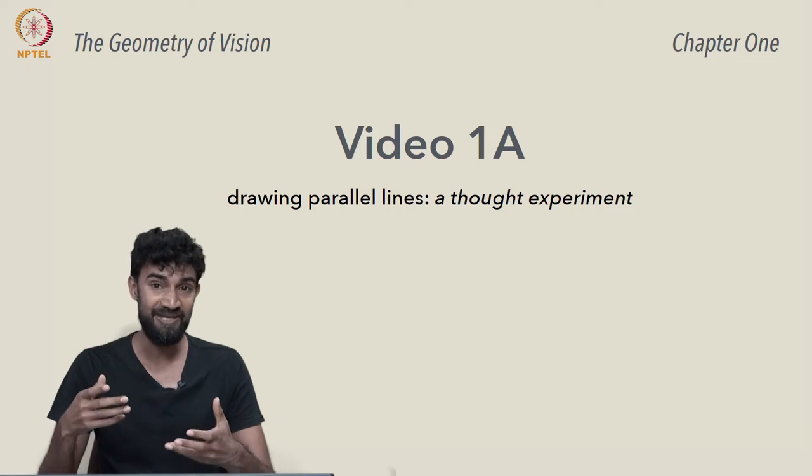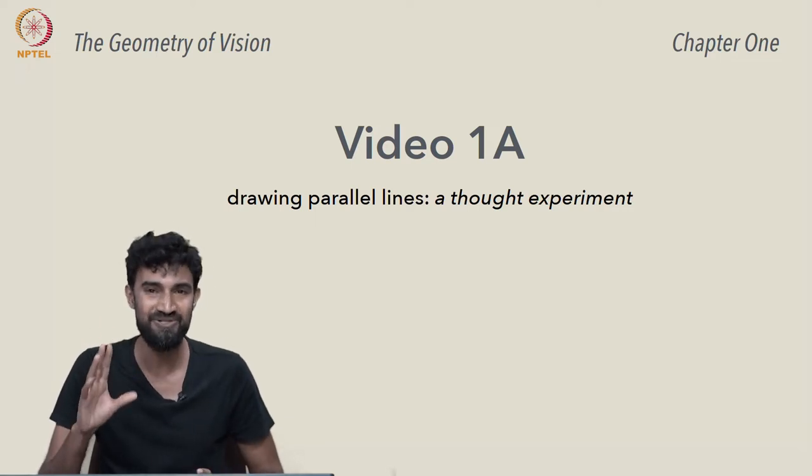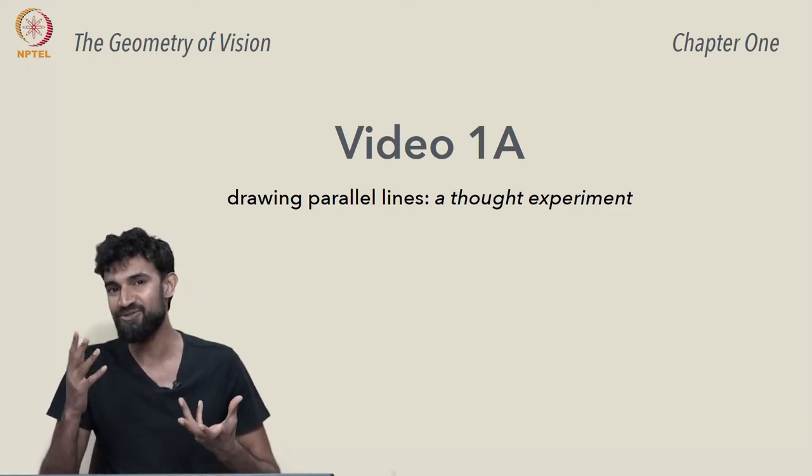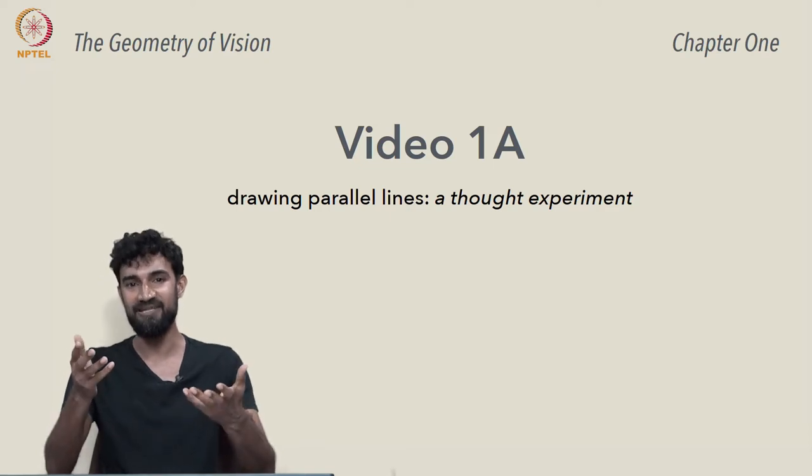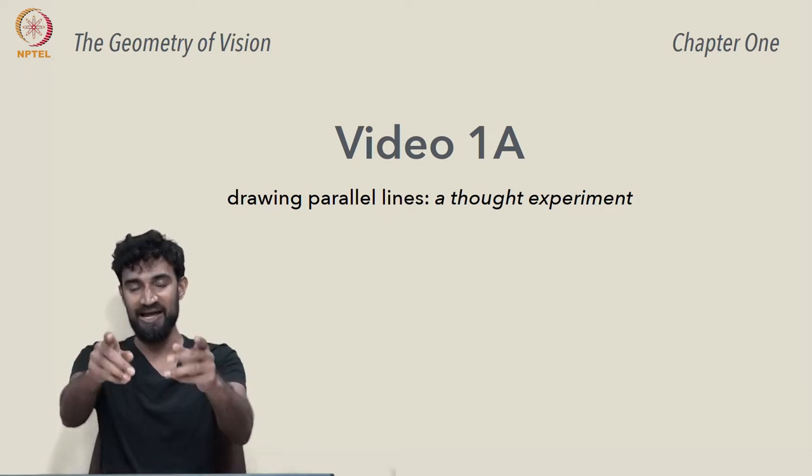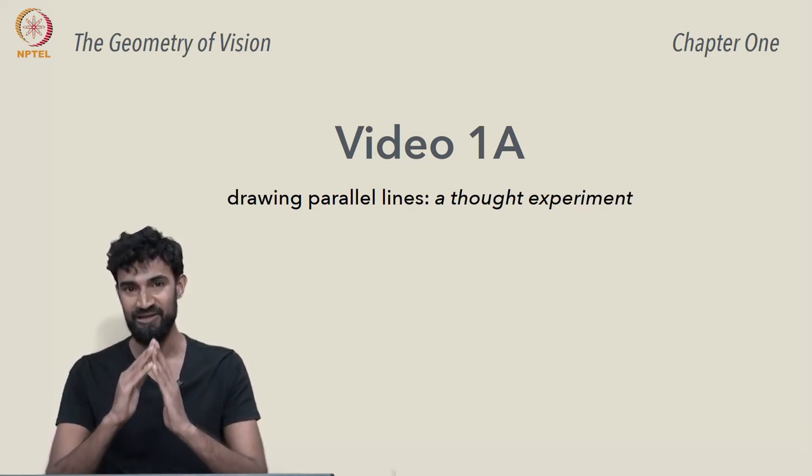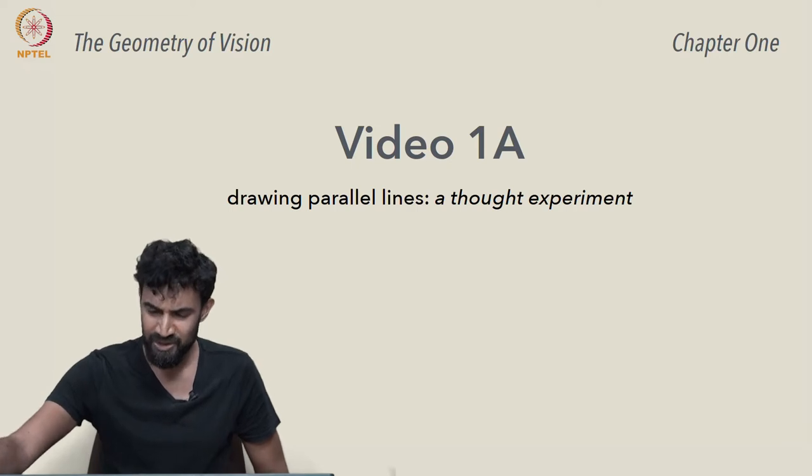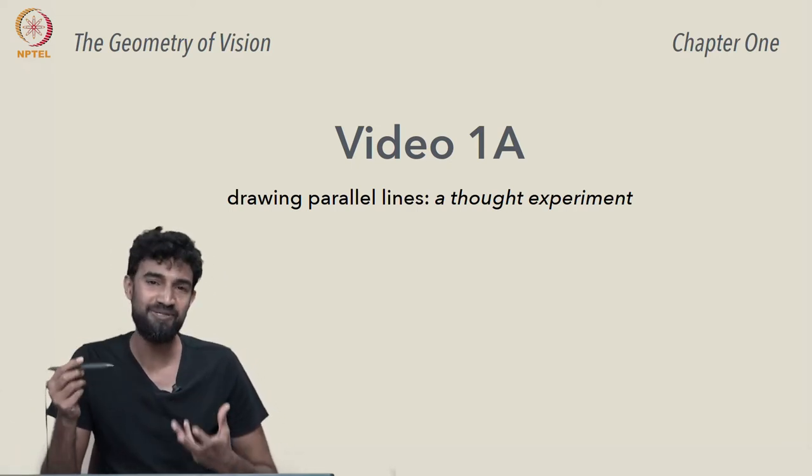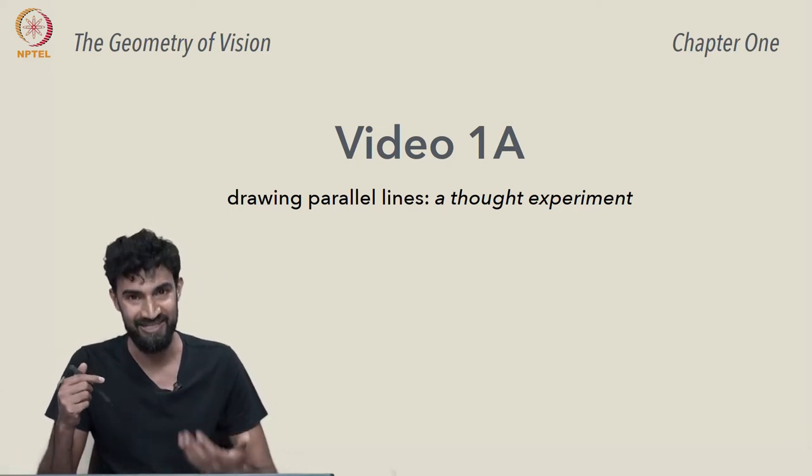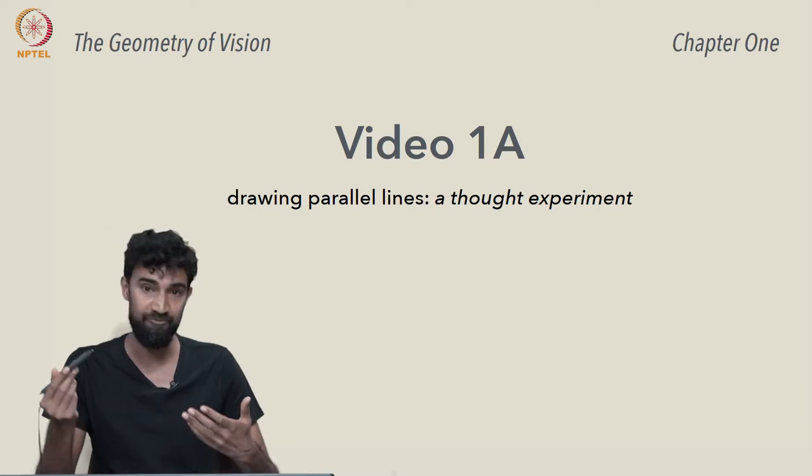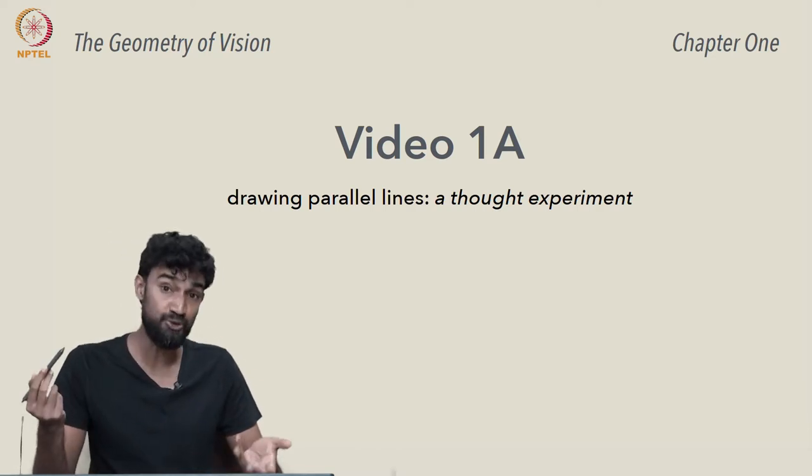Whatever the case may be, that two-dimensional representation has some very interesting features, like the fact that two parallel lines in space will appear to converge in that two-dimensional image. So the first order of business is to understand why that's the case. Why do images of parallel lines appear to converge?